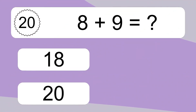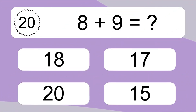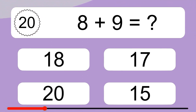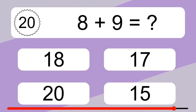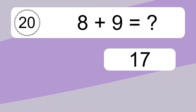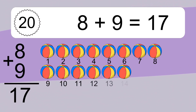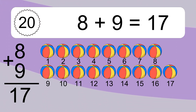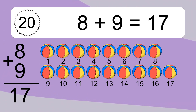8 plus 9 equals what? 8 plus 9 equals 17. Let's count it. 1, 2, 3, 4, 5, 6, 7, 8, 9, 10, 11, 12, 13, 14, 15, 16, 17.